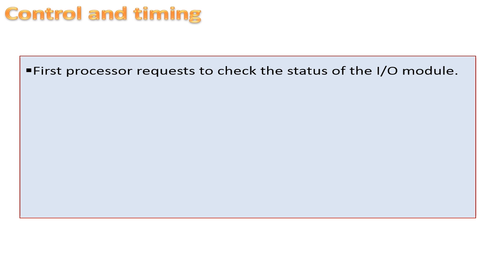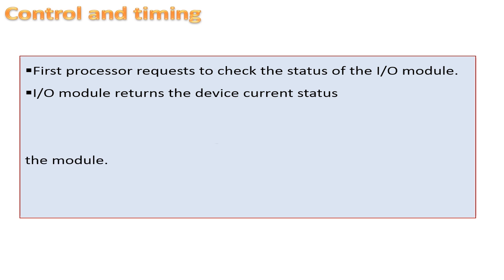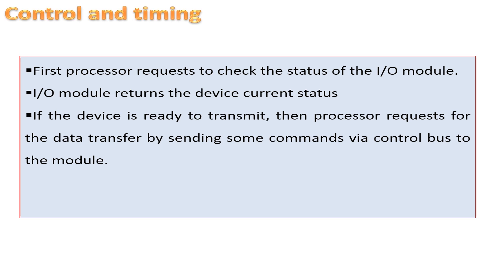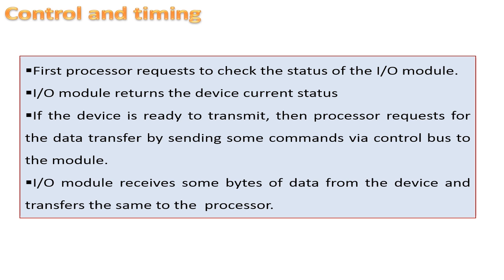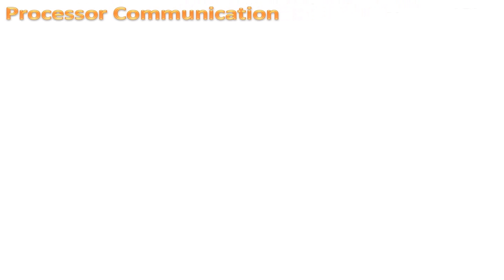Some sample transactions are as follows. First, the processor requests to check the status of the input-output model, and the input-output model returns the device's current status. If the device is ready to transmit, then the processor requests for data transfer by sending some commands via control buses to the model. The input-output model receives some bytes of data from the device and transfers that data to the processor.